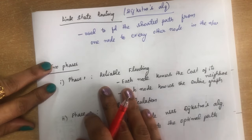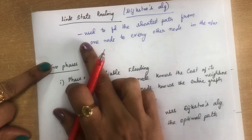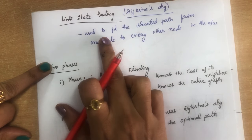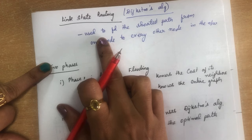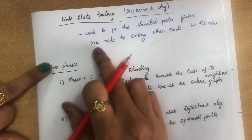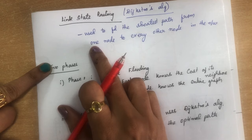Hello everyone. Next we are going to see the new topic in third year and that is link state routing. In the previous video we have seen distance vector routing. In distance vector routing we circulate the entire routing table to the nearest neighbors, but in link state routing we send only the link state information to the nearest neighbors. That is the main difference between the two.